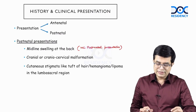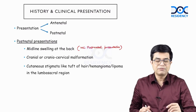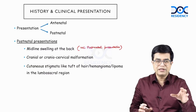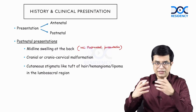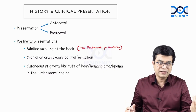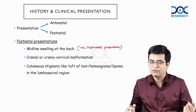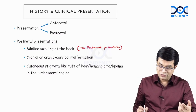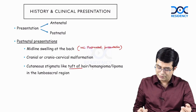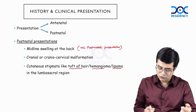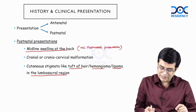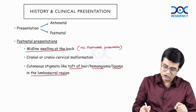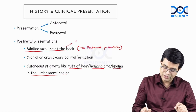Sometimes there will be a cranial or cranio-cervical malformation, which can be isolated or can be part of the entire spectrum of spinal cord and head and neck involvement. Thirdly, there can be cutaneous stigmata like a tuft of hair, hemangioma, or lipomas in the lumbosacral region. If this kind of presentation is there, then you will think of meningocele or meningomyelocele.